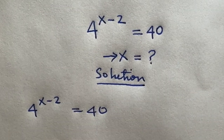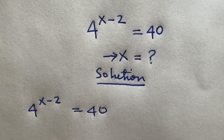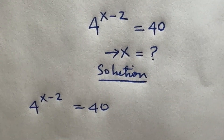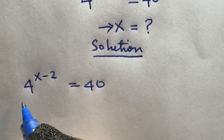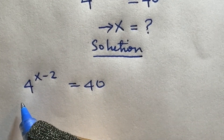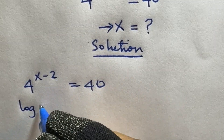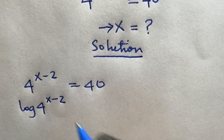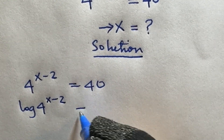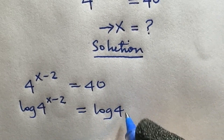This is an exponential problem and there are more than two ways to approach this problem, but what I'm going to do is take the logarithm of both sides. So I have log of 4 raised to power x minus 2 is equal to log 40.